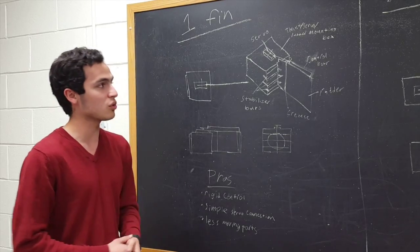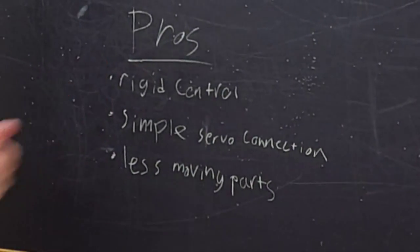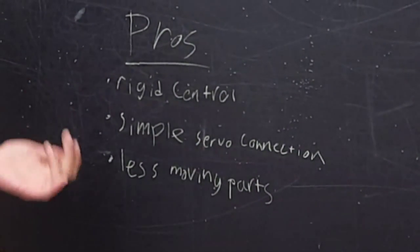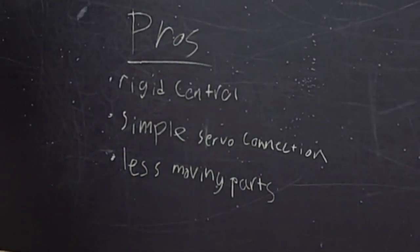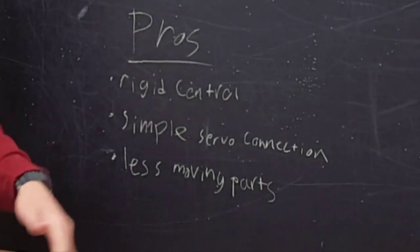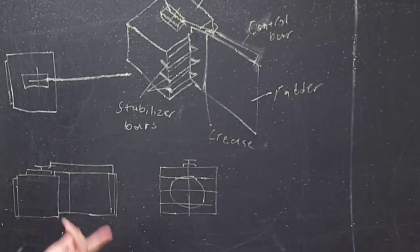This gives us a rigid control unit, so it helps our steering be more accurate. It gives us a simple servo connection—being this bar, we can just bend it and work it right through a hole and work the fins on the servo—and it also gives us less moving parts than the second option, the two fin.